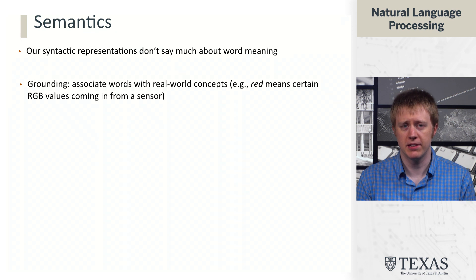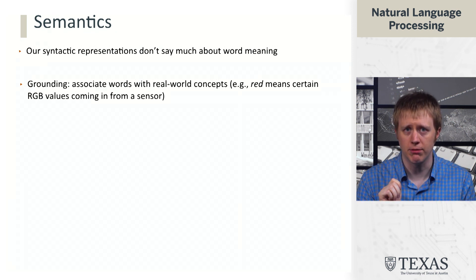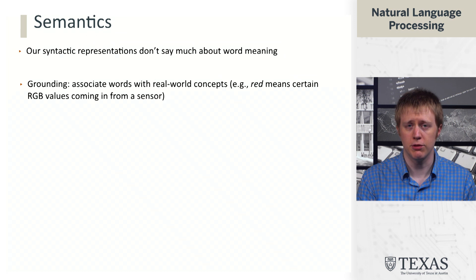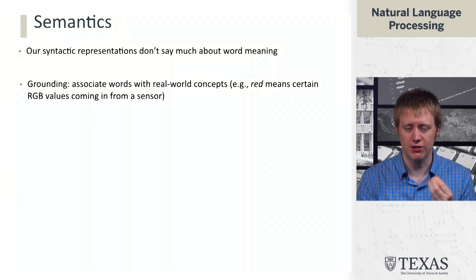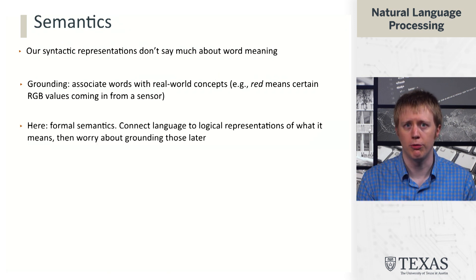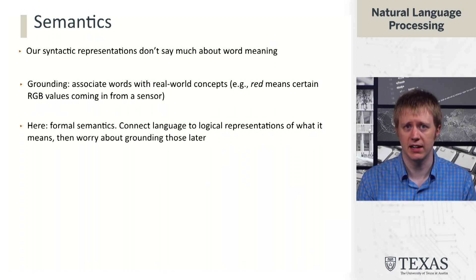One approach to semantics which we're not going to talk about right now is grounding, where we take individual words and sentences and associate them with real-world concepts. For example, an example of perceptual grounding is taking the word 'red' and associating it with certain ranges of RGB values from a sensor, indicating that a robot is actually perceiving the color red. Instead, we're going to talk about formal semantics, where we can convert language into a logical representation, useful for tasks like question answering and database querying. We'll come back to grounding later.